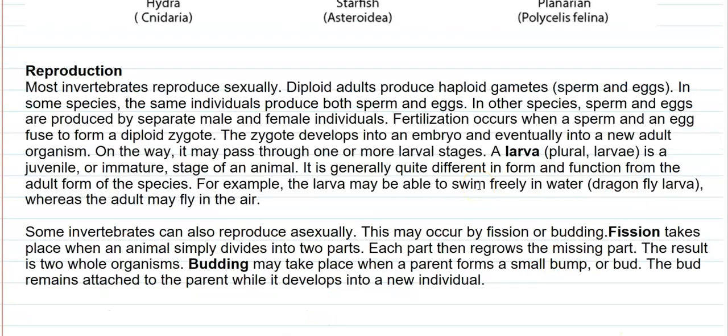Finally we look at reproduction in invertebrates. Most invertebrates can reproduce sexually; other asexual forms of reproduction are also seen. In sexual reproduction, diploid adults produce haploid gametes — sperms and eggs — which fuse during fertilization to develop into a zygote. In some species, sperm and egg production occur in separate male and female individuals, whereas in others both are present in the same individual, representing a hermaphrodite. Fertilization occurs when a sperm and egg fuse to form the zygote, which develops into an embryo and eventually into a new adult organism.